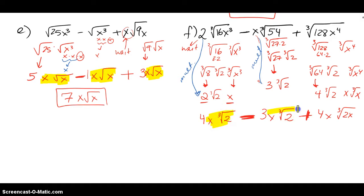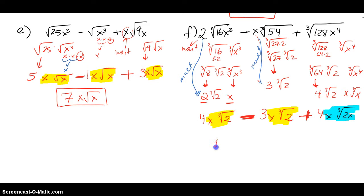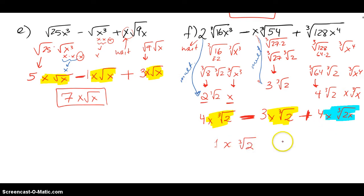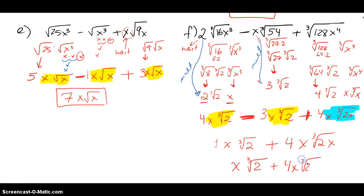Now looking at like terms: the first term (4x∛2) and second term (3x∛2) are like terms because they share the same radical. But the last term has ∛(2x), not ∛2, so it's different — I can't add it with the first two. So 4 minus 3 gives 1, leaving x∛2. The last piece just carries down, and the final answer is x∛2 + 4x∛(2x). These two are not like terms.